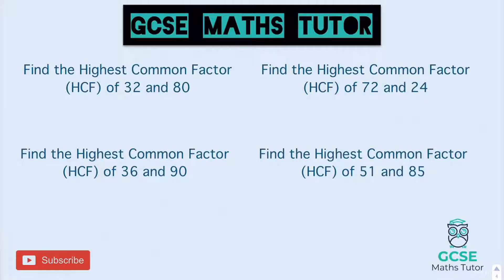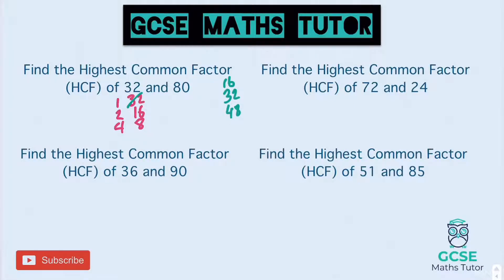The highest common factor of 32 and 80. The factors of 32 are: one and 32, two and 16. Three doesn't go in. Four does — it goes in eight times. Now we're limited, so five, six and seven don't go in. Process of elimination from the biggest: 32 doesn't go into 80. Does 16? Let's check: 16, 32, 48... add 16 again would be 80. Yes, 16 does go in — it goes in five times. So 16 is our highest common factor.